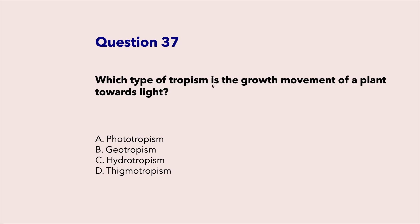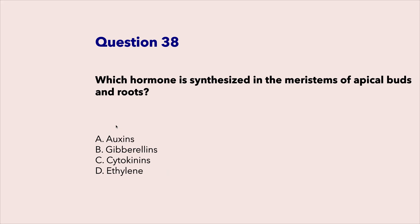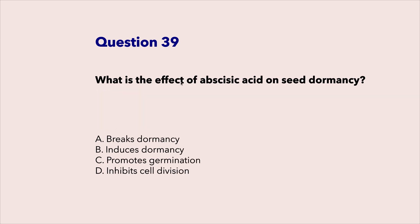Which type of tropism is the growth movement of a plant towards light? Phototropism. Which hormone is synthesized in the meristems of apical buds and roots? Auxins. What is the effect of abscisic acid on seed dormancy? Induces dormancy.